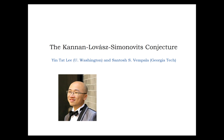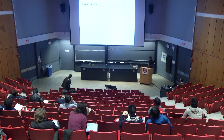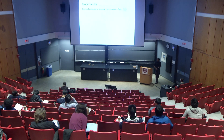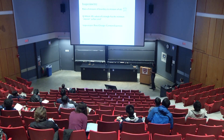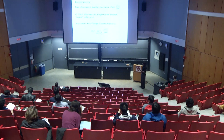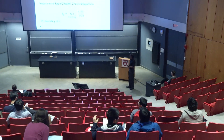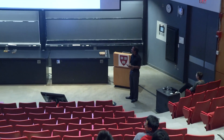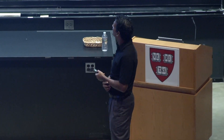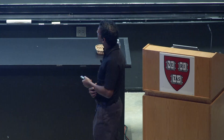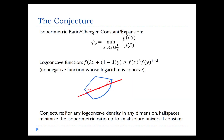Welcome back. It's time for the second lecture on the KLS conjecture. So just a quick reminder in case you've forgotten the conjecture. We're looking at the isoperimetric ratio, the Cheeger constant, and the ratio of the boundary to the subset, overall subsets of measure at most a half. And the conjecture is that for any log-concave density in any dimension, half spaces minimize this ratio up to a universal constant.